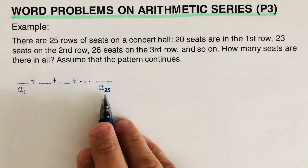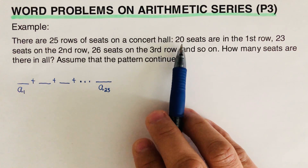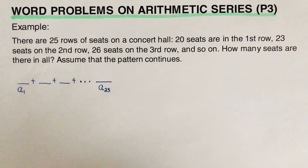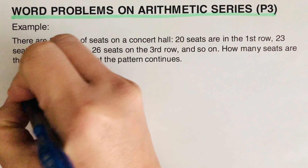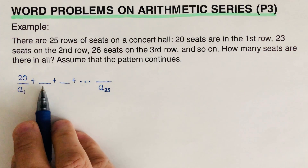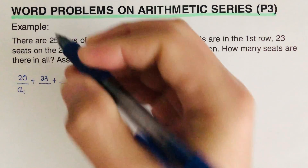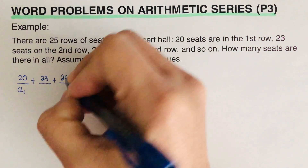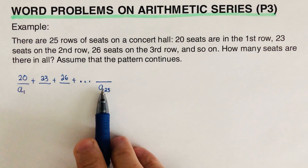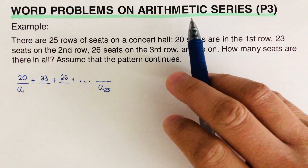Let's put in the values. It says 20 seats are in the first row, so a-sub-1 equals 20. On the second row there are 23 seats, and on the third row it's 26, and so on. The problem is we don't know what the last term is, so we need to solve for it.